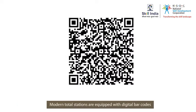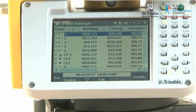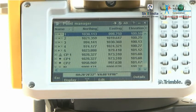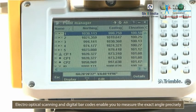Modern total stations are equipped with digital barcodes printed on glass cylinders or disks that can be rotated. Features of the total station such as electro-optical scanning and digital barcodes enable you to measure the exact angle precisely.